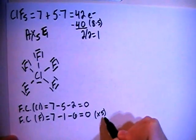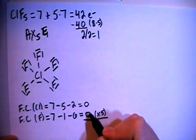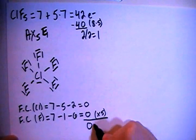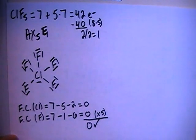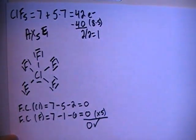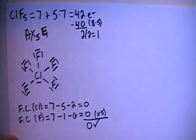We'll multiply that times 5 because there are 5 of them. If we add up all these formal charges, that results in an overall formal charge of 0, which is what we need because this is not a charged particle or compound.